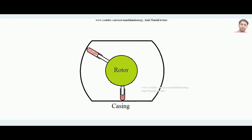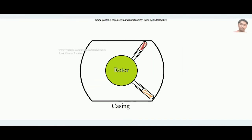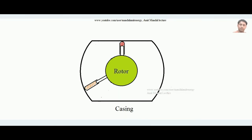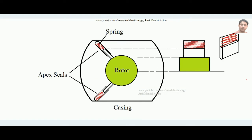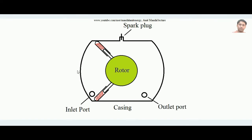As the rotor spins further, the volume increases again and the air expands. Then it compresses again, then expands — this alternating compression and expansion continues. This happens because the apex seals remain in perfect contact with the inner surface: the spring expands the seal where needed and compresses it where needed, always maintaining a perfect seal with the casing.